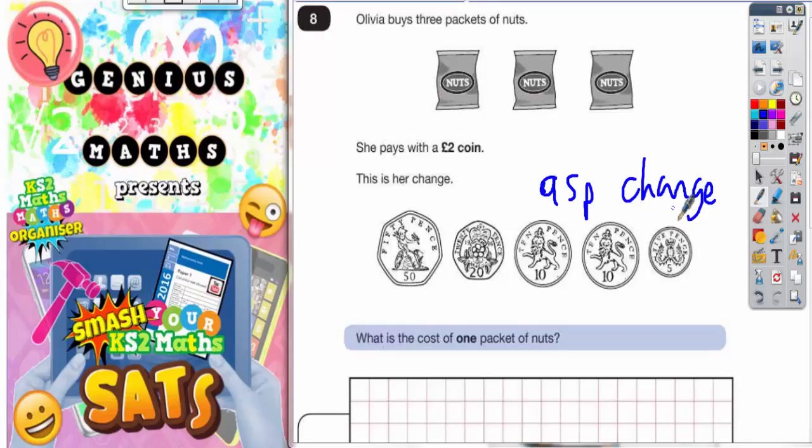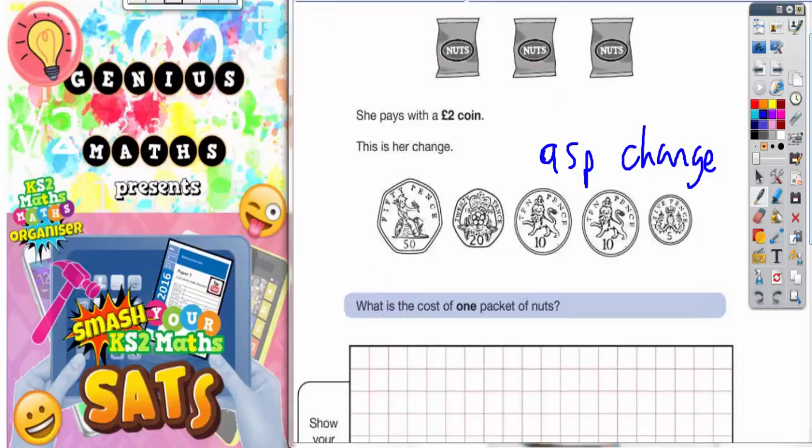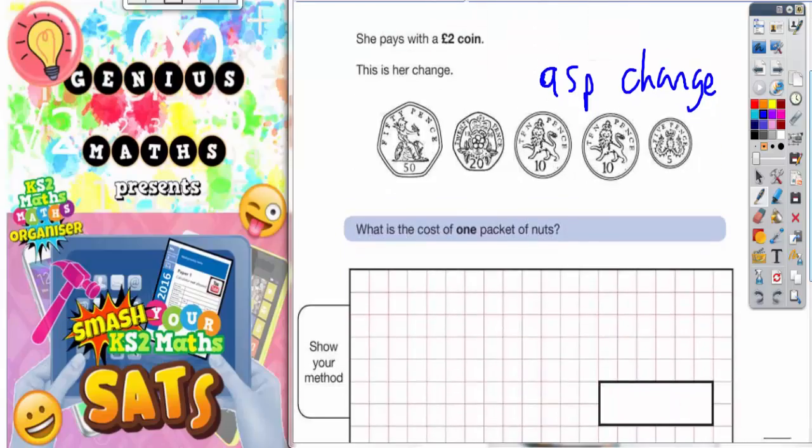So if she's got 95 pence change and she paid with a two pound coin, we need to figure out what she actually spent on the nuts.